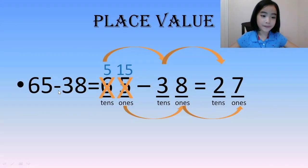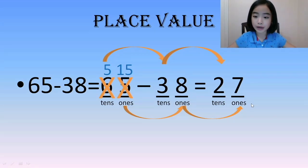65 minus 38. For 65, we have 6 tens and 5 ones. And for 38, we have 3 tens and 8 ones. We can't subtract 8 from 5. So, we need to break a 10. 65 is equivalent to 5 tens and 15 ones. Now, we can subtract. 15 ones minus 8 ones equals 7 ones. And 5 tens minus 3 tens equals 2 tens.